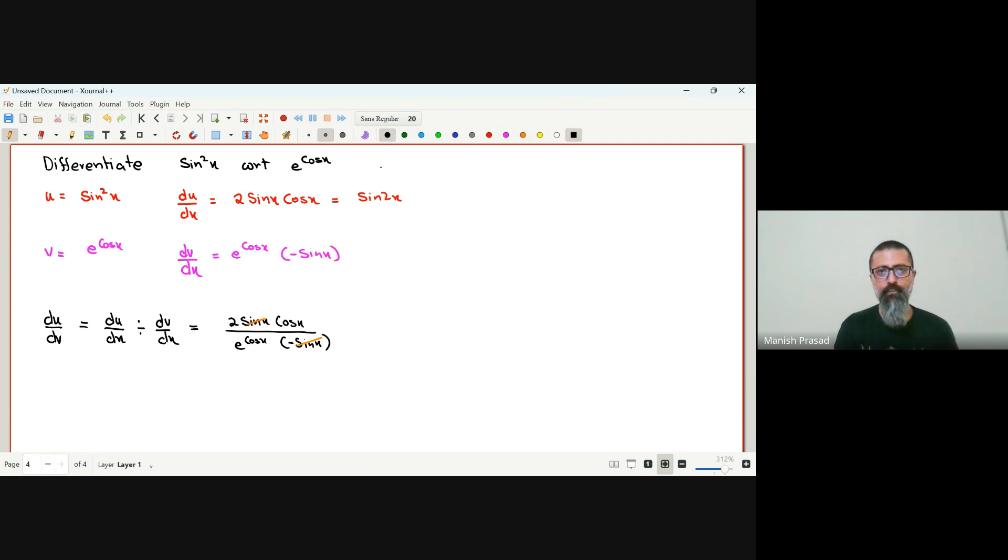So we are left with negative 2 cos x over e to the power of cos x. Is this the answer that all of us have got?